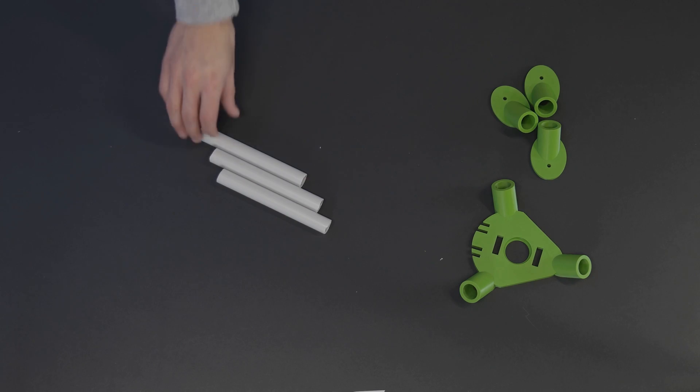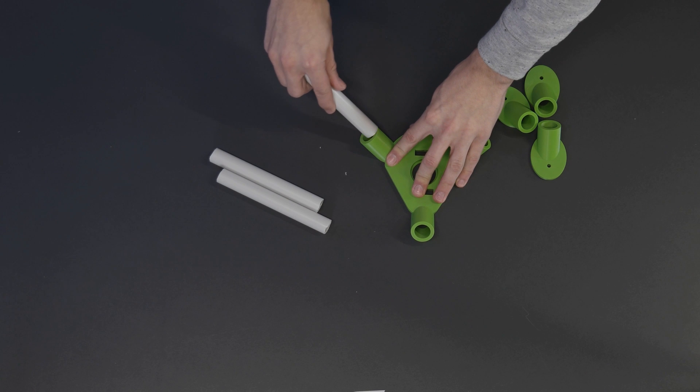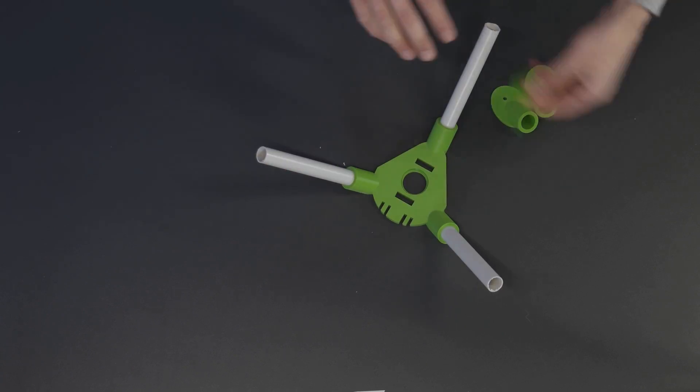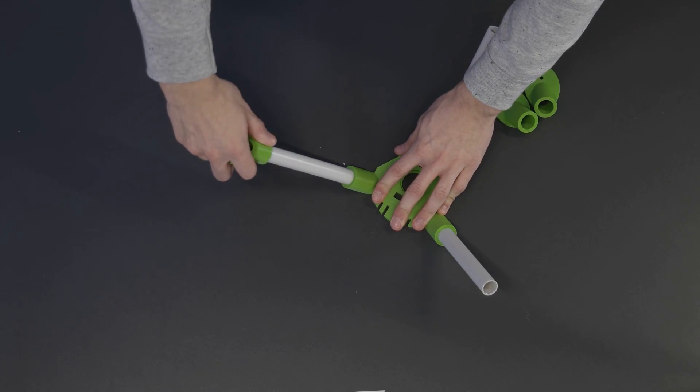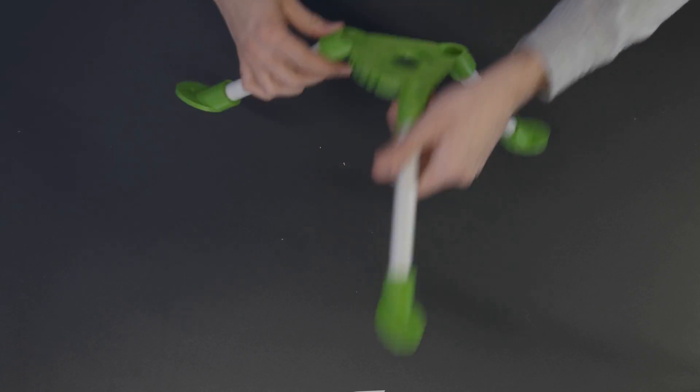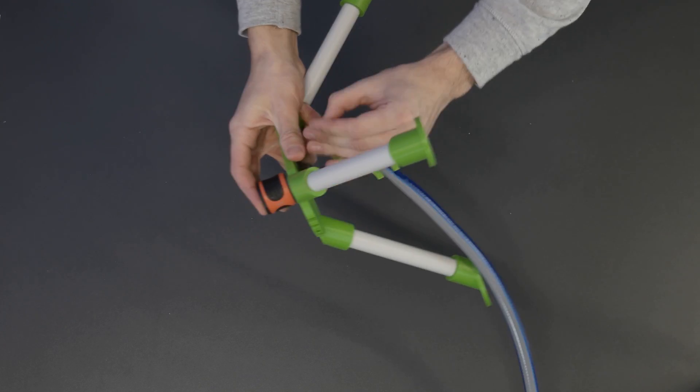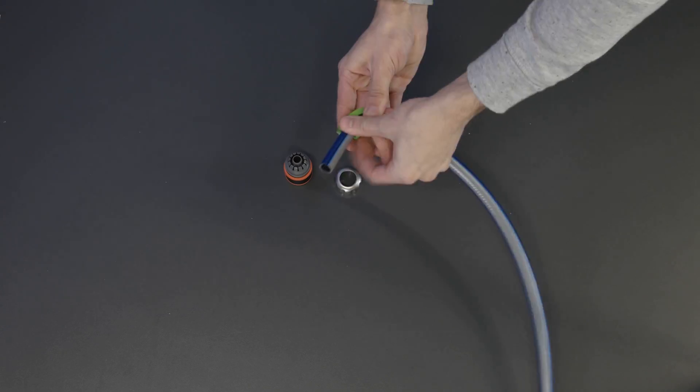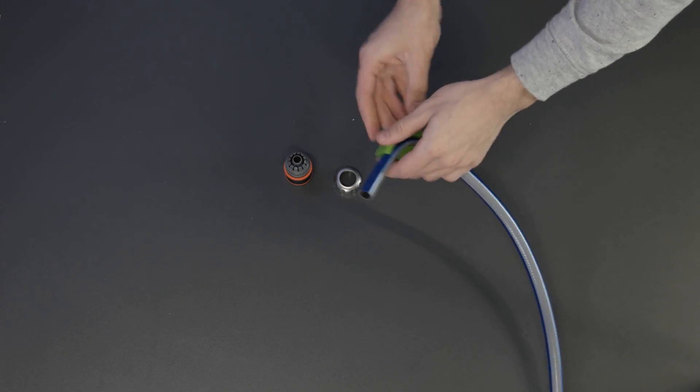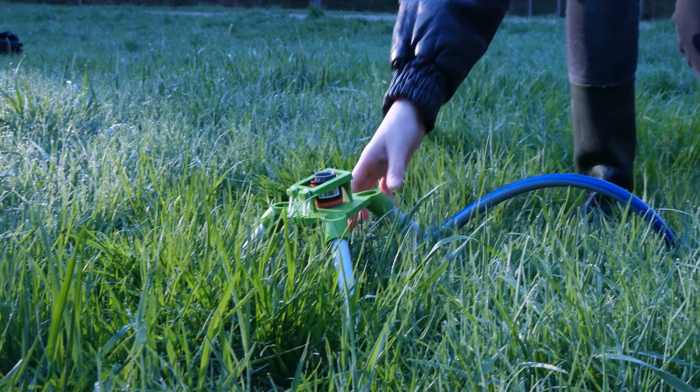After you have successfully printed all the components, you can assemble Potpad by connecting the base plate with the feed using three short PVC pipes. Now you have to mount the garden hose and its coupling to the launcher. Don't forget the 3D printed hose bender, which will later be useful when you put the launcher on the ground.